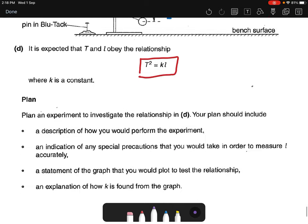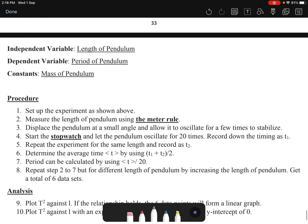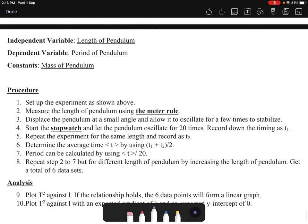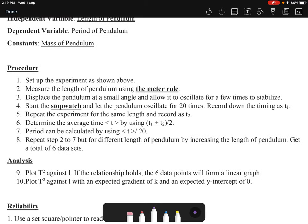Let's move on to the report. So first of all, you can see I defined the independent variable - the independent variable is the length of the pendulum, so it's always the x. Then after that, the dependent variable is the period of the pendulum. Then the constants is the mass of the pendulum and so forth. You need to give all these three things. Then after that, I proceed on to the procedure.